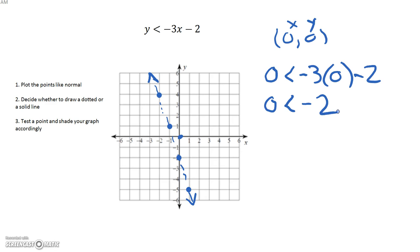So that means that 0, 0 is not a solution to our inequality. So we are going to shade the side that does not include the 0, 0. Again, what that means is that any point that's shaded on our graph is a solution. Any point that's not shaded will not be a solution.